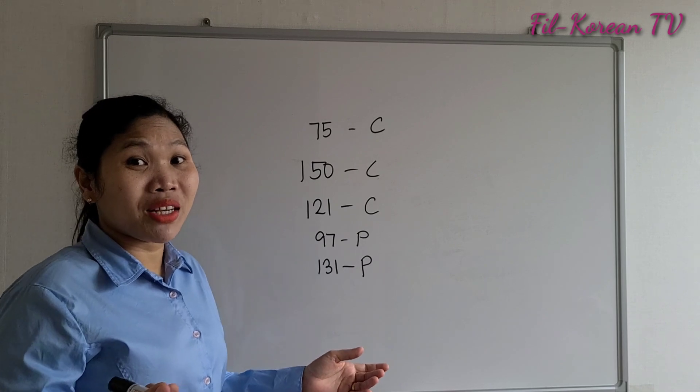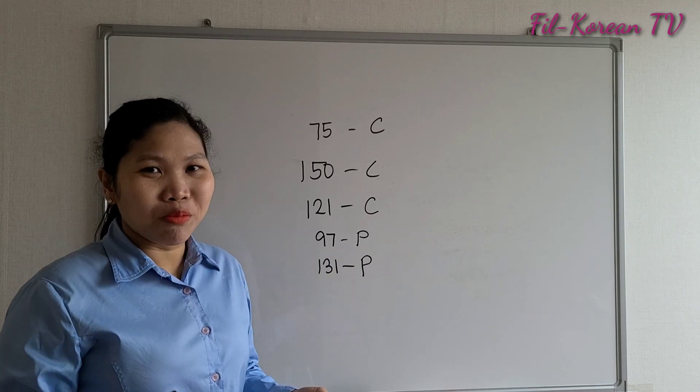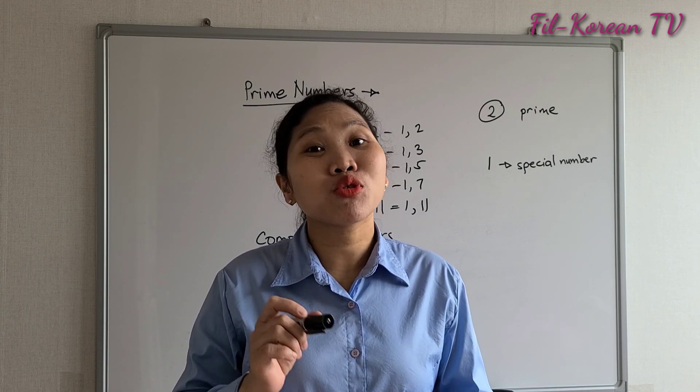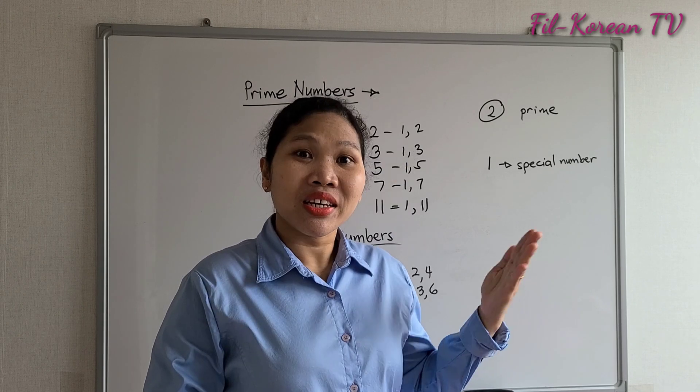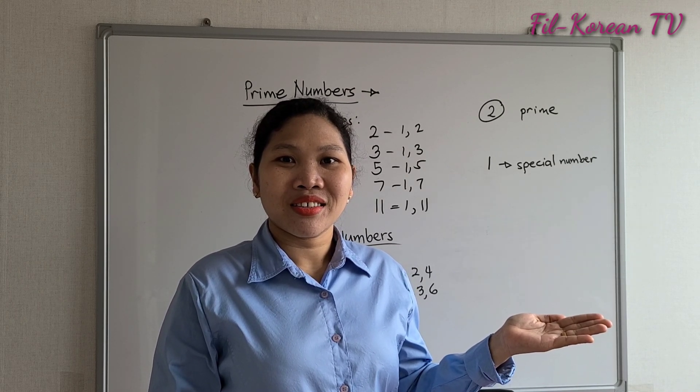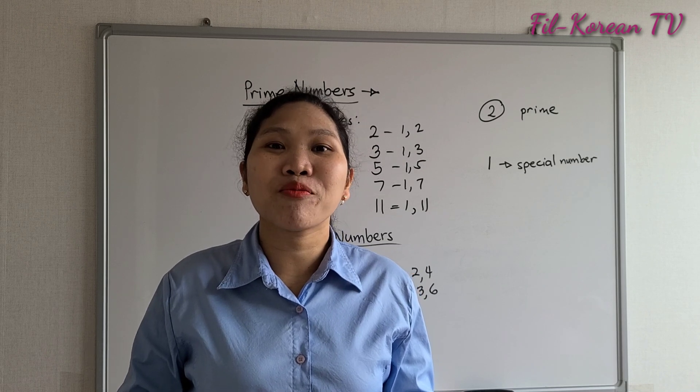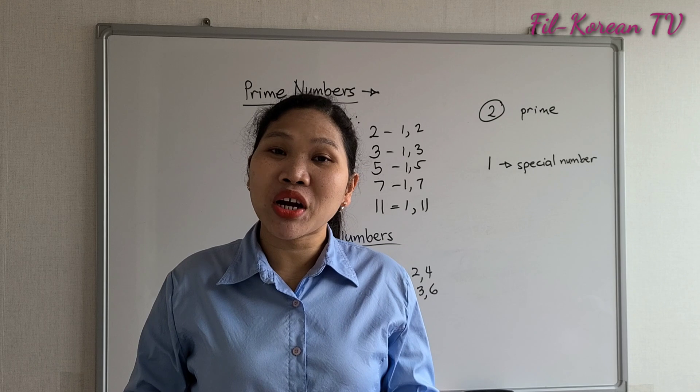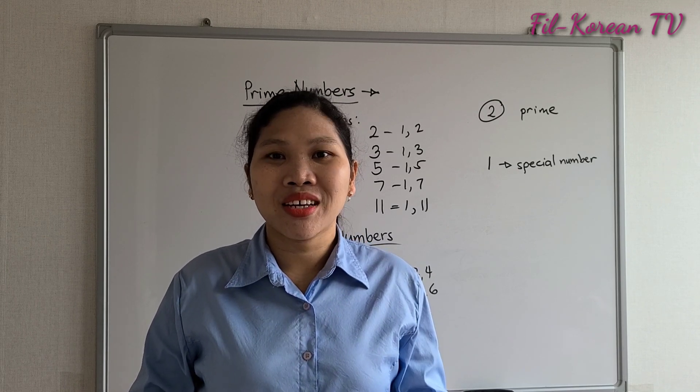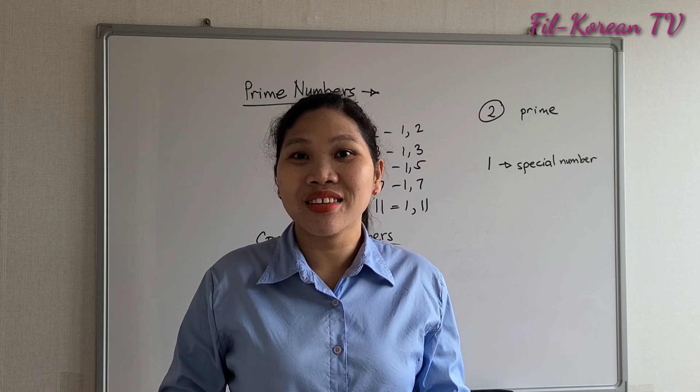So I just apply the divisibility rule so that I can determine quickly whether a number is prime or composite. Another tip for you: there are 25 prime numbers from two to one hundred. Here are the prime numbers from two to one hundred. If you memorize the smaller prime numbers, that is very much helpful to you in solving fractions, getting GCF, and finding LCM. No need to memorize all, but at least the lower numbers below thirty, because those are usually used in finding GCF and LCM.